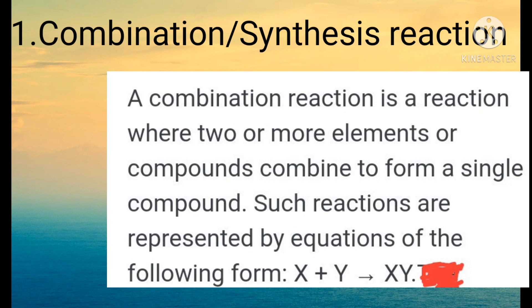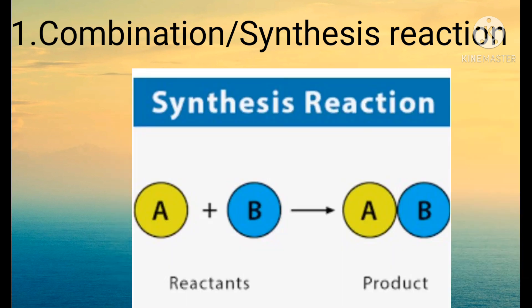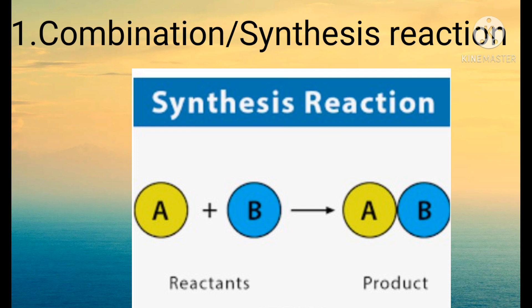The first type is combination reaction. The other name of combination is synthesis. It is a reaction in which two or more than two reactants combine to form only one product. Here is an example: two reactants A and B combine to form only one product, that is AB. So this reaction is called combination or synthesis reaction.